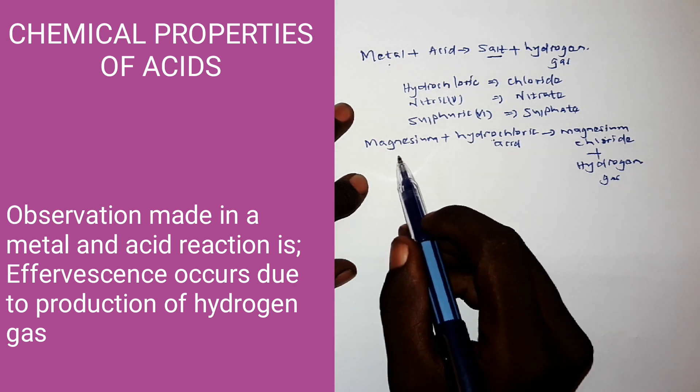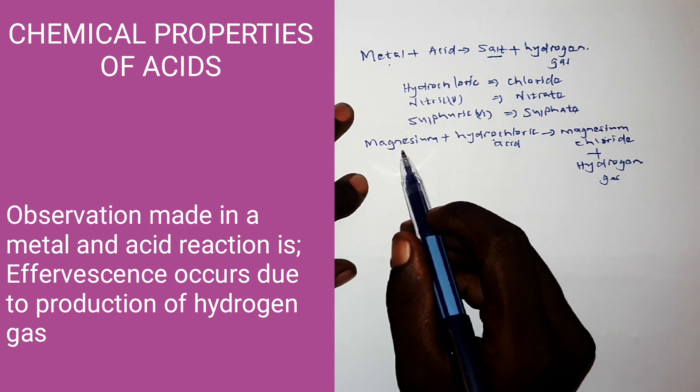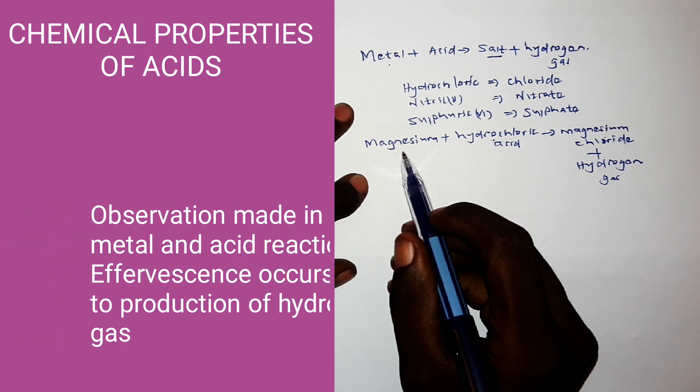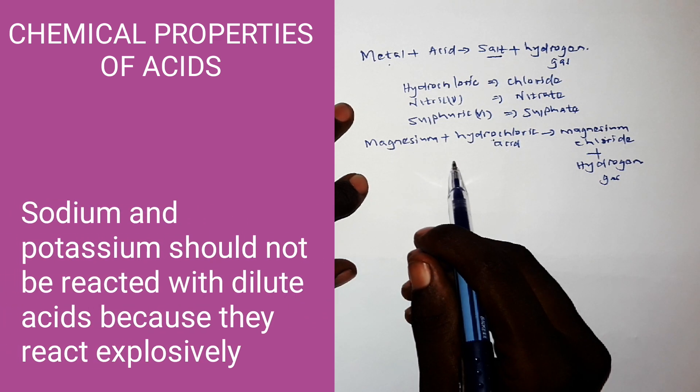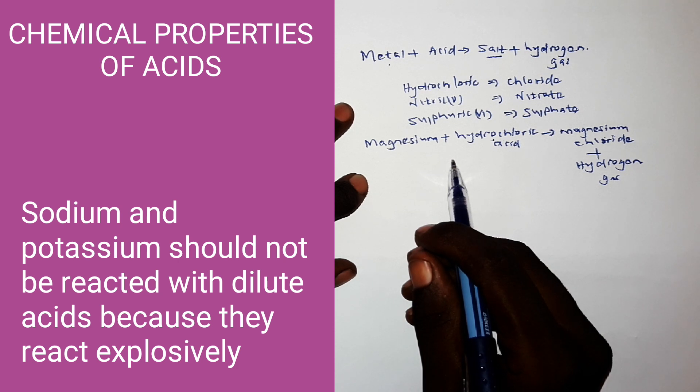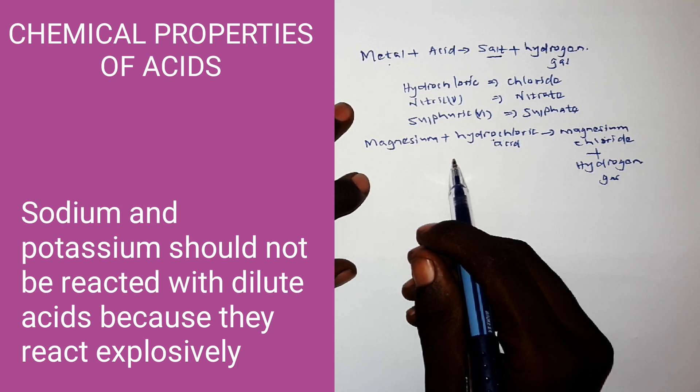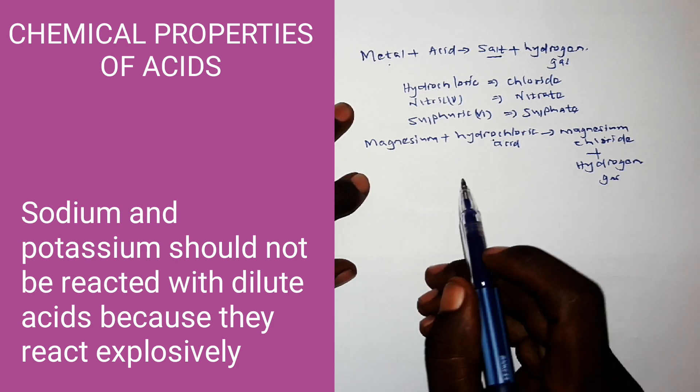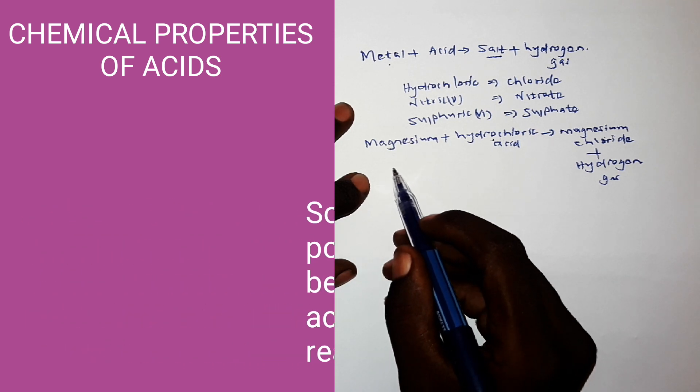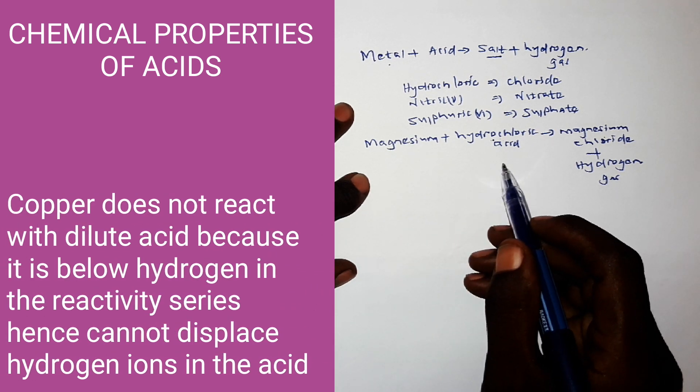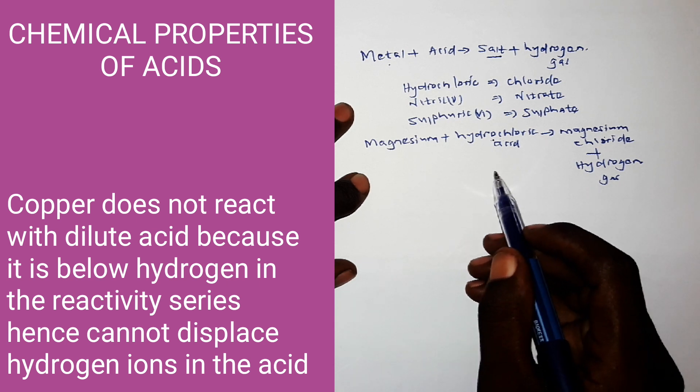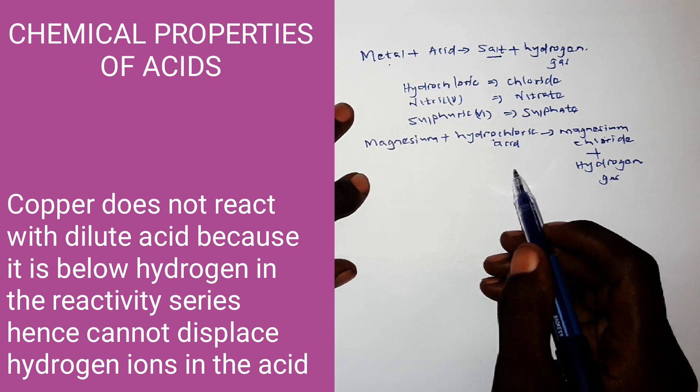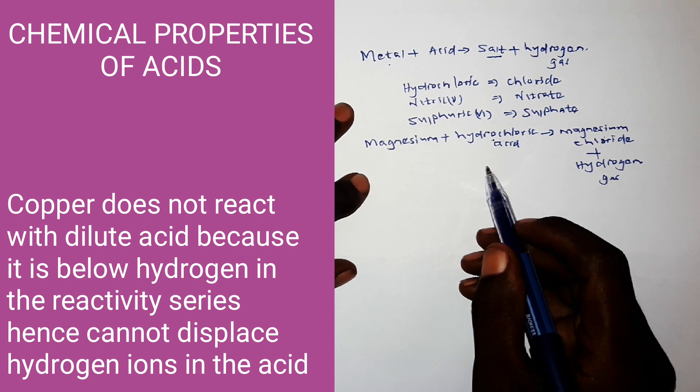Now, there are things you're supposed to note in this reaction of acids with metals. Metals like sodium and potassium should not be reacted with dilute acids because they react explosively. Another note is copper does not react with dilute acids because copper is below hydrogen in the reactivity series and cannot displace hydrogen ions in the acid.